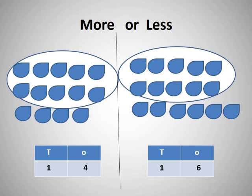The second picture: one, two, three, four, five, six, seven, eight, nine, ten — one ten. And the remaining: one, two, three, four, five, six — six ones. So, one ten and six ones, that is sixteen. Which is more? Sixteen is more or fourteen is more? So, sixteen is more and fourteen is less.